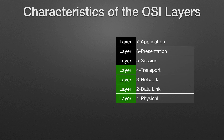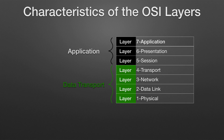The seven layers of the OSI reference model can be divided into two categories: upper layers and lower layers. The upper layers deal with application issues and are generally implemented only in software. The highest layer, the application layer, is closest to the end user. The lower layers handle data transport issues. The physical layer and the data link layer are implemented in hardware and software. The lowest layer, the physical layer, is closest to the physical network medium — for example, the network cabling — and is responsible for actually placing information on the medium.